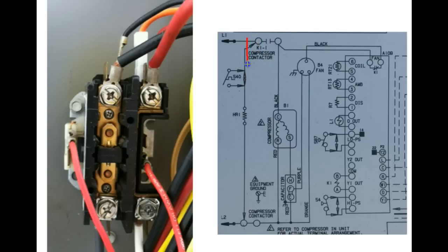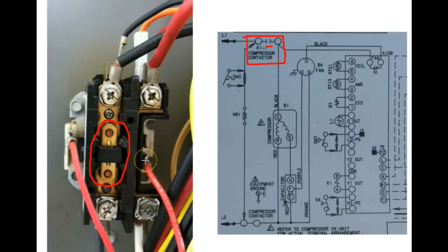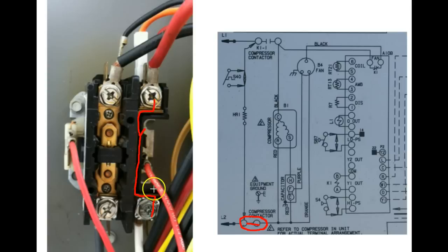Looking at K1-1, the compressor contactor, you can see this shows a break in the electrical path right here. That break is represented by this contact symbol that gets pulled in when the coil is provided with voltage. Then we have the compressor contactor down here, which is just a straight electrical connection represented by a bus bar. This bus bar makes complete contact all the way through. That is how this portion of the contactor is represented on the schematic diagram.